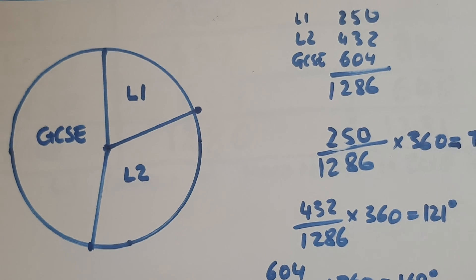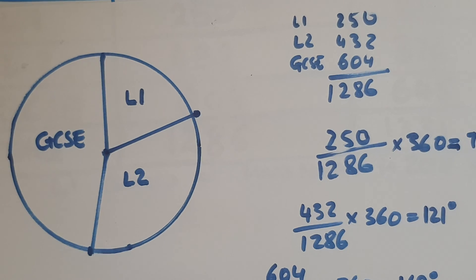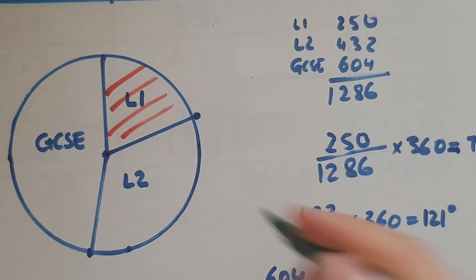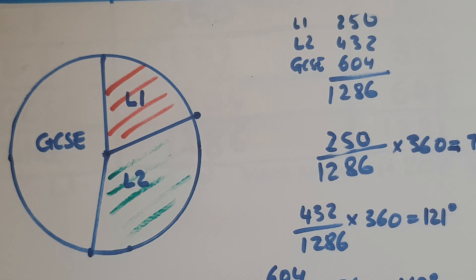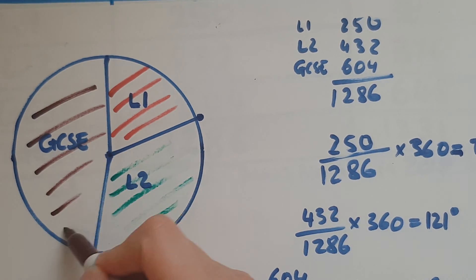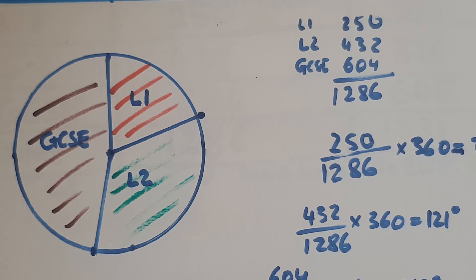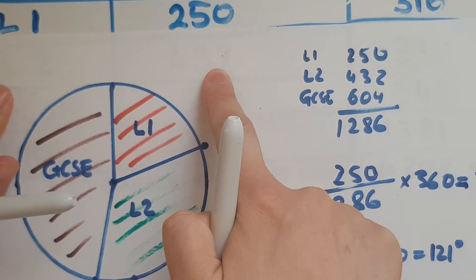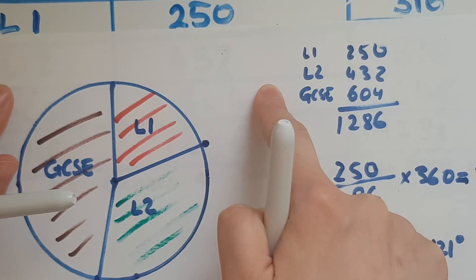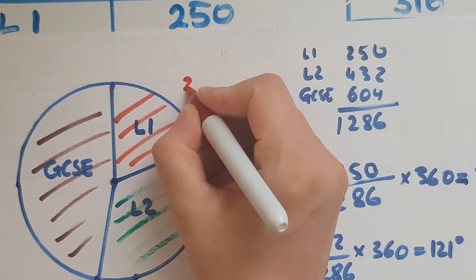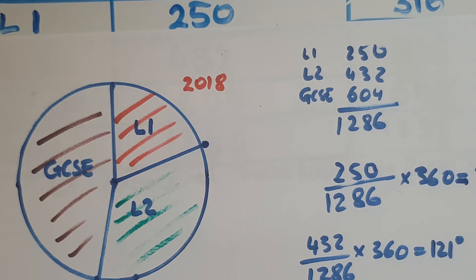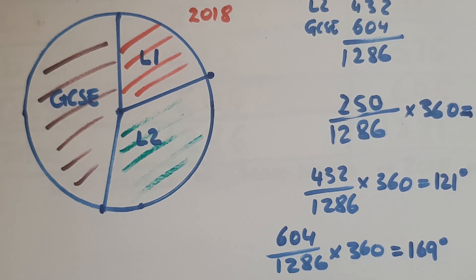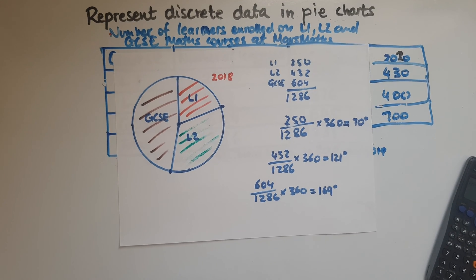So to make this clear, we would color them in different colors. So level one, level two, and GCSE. We'd give this a title. So I would say number of learners enrolled on level one to GCSE maths courses at MathsMass in 2018. So it's very clear that we're talking about a specific year. So the title would be exactly the same one that we used for the table and the bar charts.